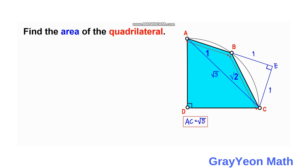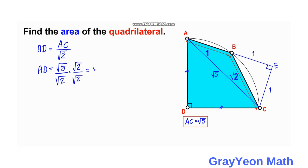Next, we find the lengths AD and DC, which are equal. We divide AC by √2 to get either value. So AD = AC / √2 = √5 / √2. Rationalizing by multiplying by √2/√2 gives √10 / 2. So AD equals √10 over 2.